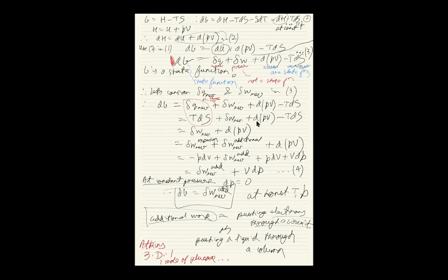Many of you have done thermodynamics in high school or freshman chemistry at a first level. The reason Chem 481 is a step further is primarily because of the state function vs. path function distinction. The next level is Chem 684, graduate thermodynamics, where the key tool is Legendre transforms. There, the starting point is that entropy is a function of N, V, and energy. But we are in Chem 481, so let's stay here.